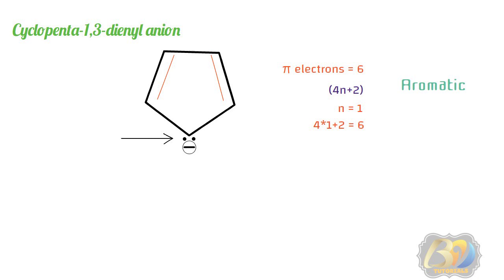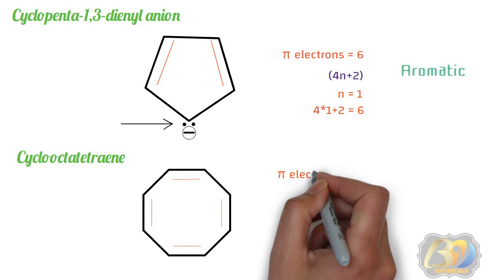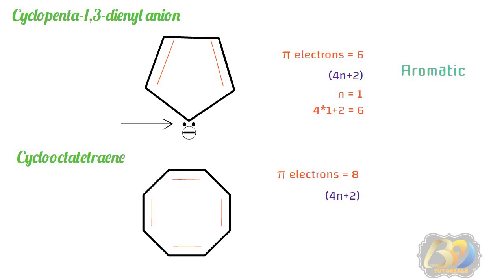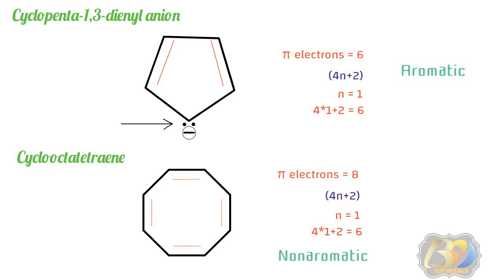Next is cyclooctatetraene. It is cyclic and planar, all ring carbon atoms are sp2 hybridized, and it contains alternate single and double bonds. It has 4 pi bonds, meaning 8 pi electrons are present. For n=1: 4×1+2 = 6 — not equal to 8. For n=2: 4×2+2 = 10 — also not equal to 8. The number of pi electrons does not match any value of 4n+2. Hence, cyclooctatetraene is non-aromatic.